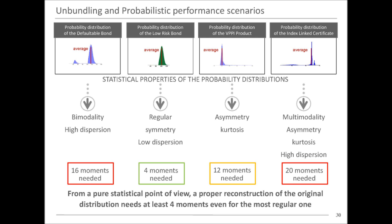So now it is not only intuition that supports the argument that the first moment cannot help you make the best decision — you also have statistical backing for this conclusion. Are there any questions so far? Everything is clear?